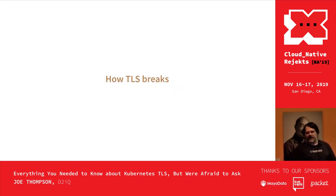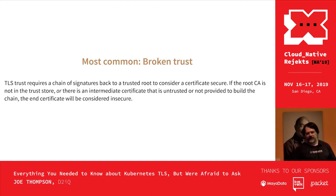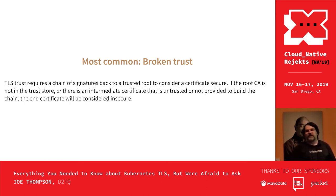How does TLS break? There are a couple of common ways. The most common is a broken trust chain. You have to trust the root CA and every intermediate certificate in the chain. If you don't trust the root CA, or there's a missing intermediate certificate — maybe you would trust them all if you had them all to build the full chain — if it's not there or marked as untrusted, then none of the leaf certificates will be trusted either.